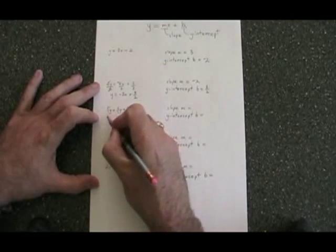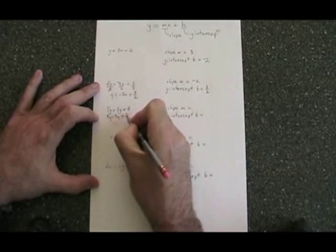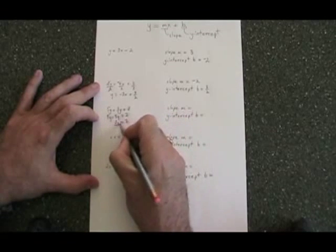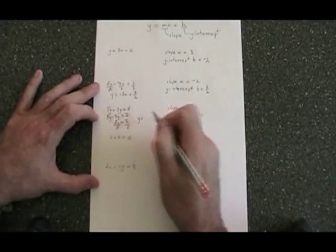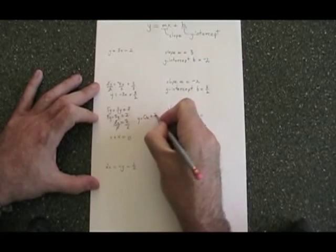If we move the 3y to the other side, it becomes negative, and we end up with 2y equals 7. If we divide both sides by 2, we end up with y equals 7 halves, but we can write that as y equals 0x plus 7 halves.